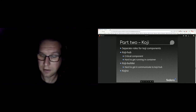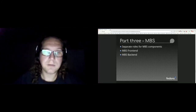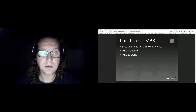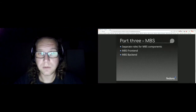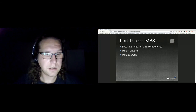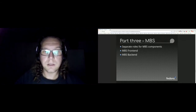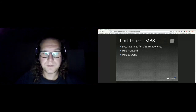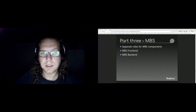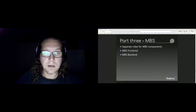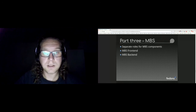Once we got those two running, Koji Worker was the easy one. Even MBS didn't take as much time as Koji. For MBS, both components have separate roles. We also created a shared role for some components, because most components used the Koji mount point, so we deployed that only once rather than for every component. MBS had plenty of shared configuration options, so the shared role helped clean the code and get things deployed faster.